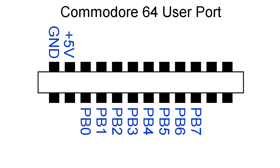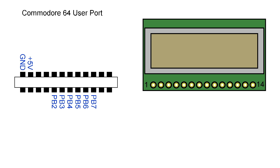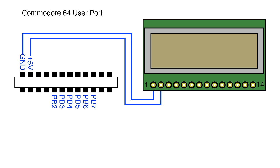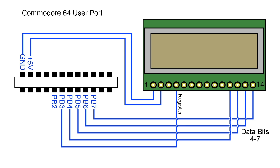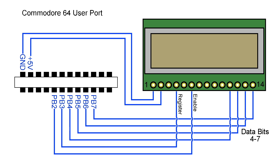Back to our user port diagram: we will only need 6 pins to control the screen instead of 8. We'll use the ground and +5 volts to power the screen, then these last 4 lines for the data bits. PB3 can operate the register select, and PB2 can operate the enable line.